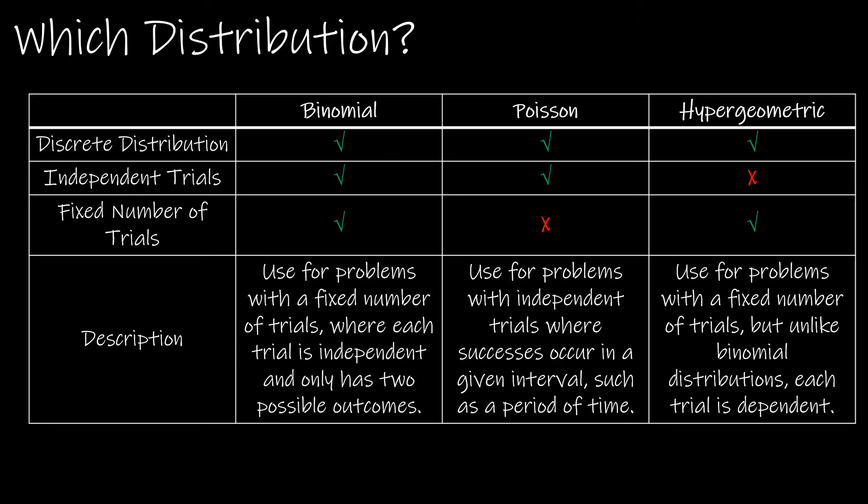So a quick recap. All three are discrete distributions, just like the original questions that we did when we made our own probability model. For a binomial and a Poisson distribution, the trials must be independent, but remember that hypergeometric did not have independent trials — in fact, it needed to be dependent.